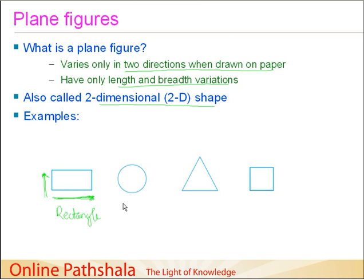Why? Because it is a plane. Similarly, we have a circle. Again, if you have a look at the circle, there is a variation in this direction and then in this direction. Similarly, if we have a look at the triangle, it is occupying two dimensions here.